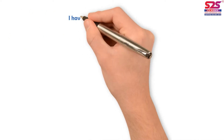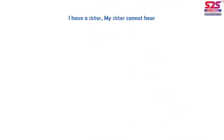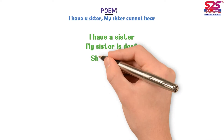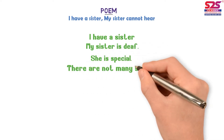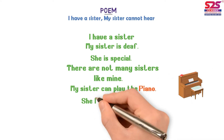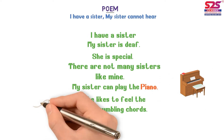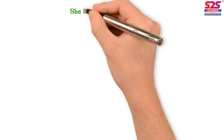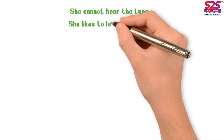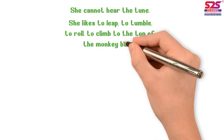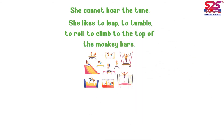Now let us read about a child who cannot hear yet can do many things. The poem goes: 'I have a sister. My sister is deaf. She is special — there are not many sisters like mine. My sister can play the piano. She likes to feel the deep rumbling chords, but she'll never be able to sing — she cannot hear the tune. She likes to leap, to tumble, to roll, to climb up to the top of the monkey bars.'